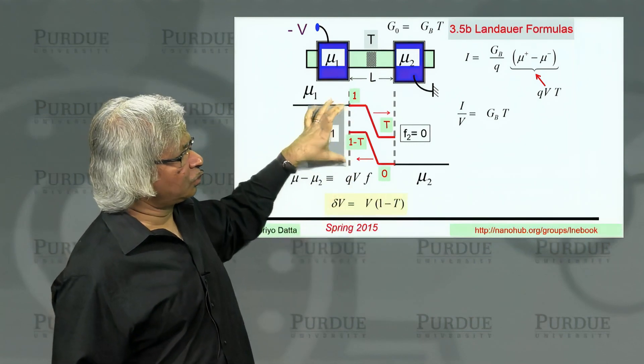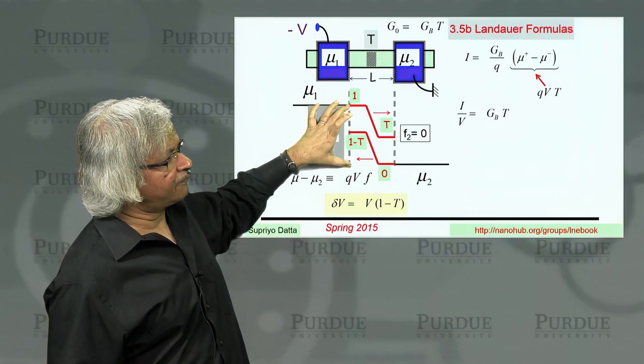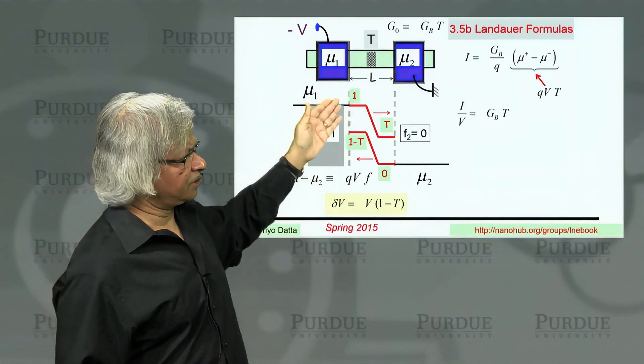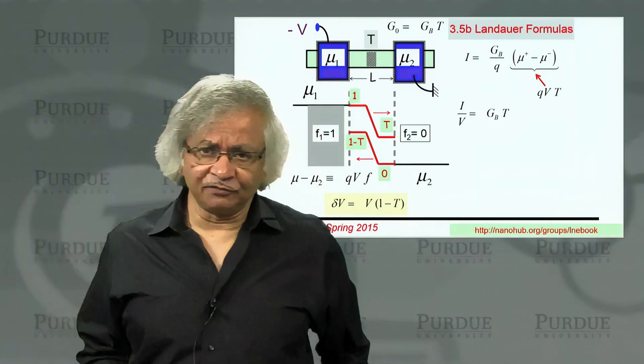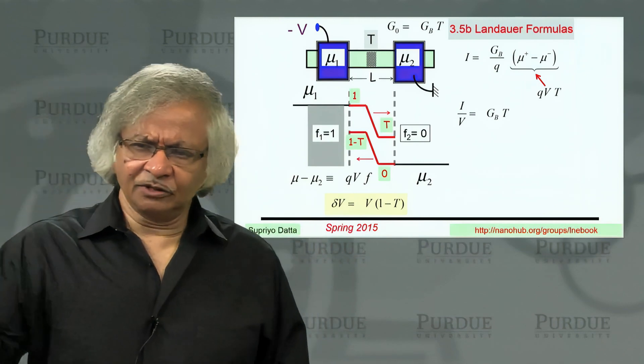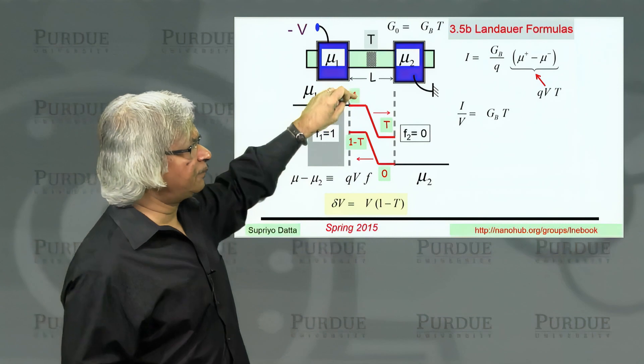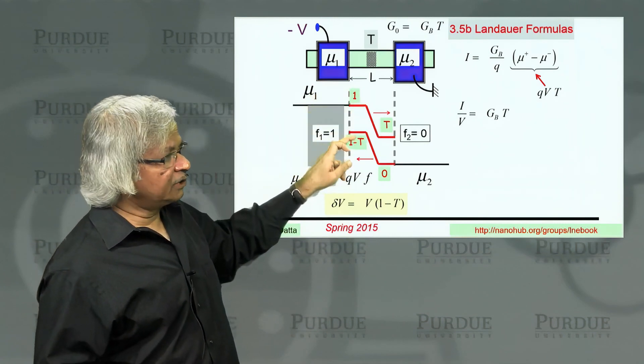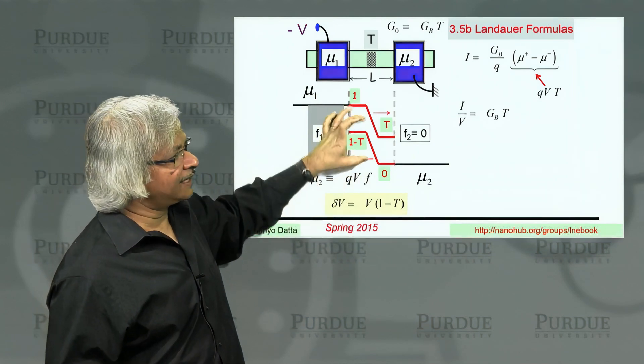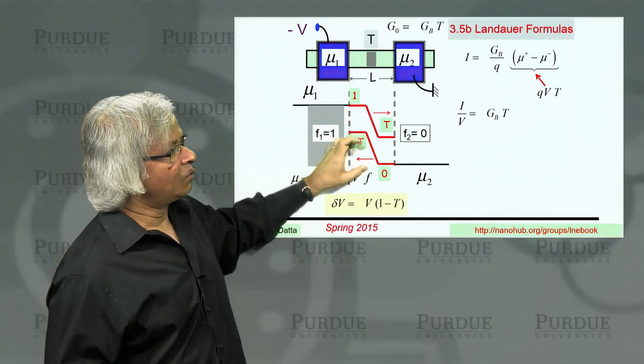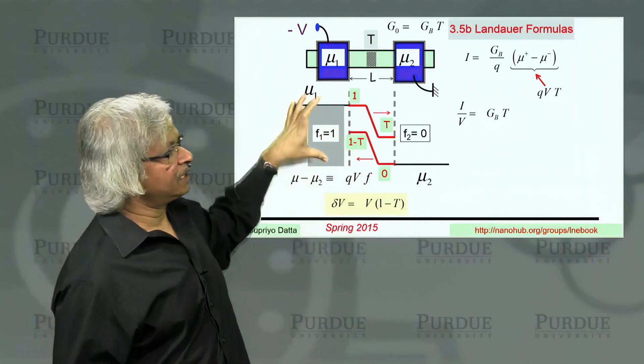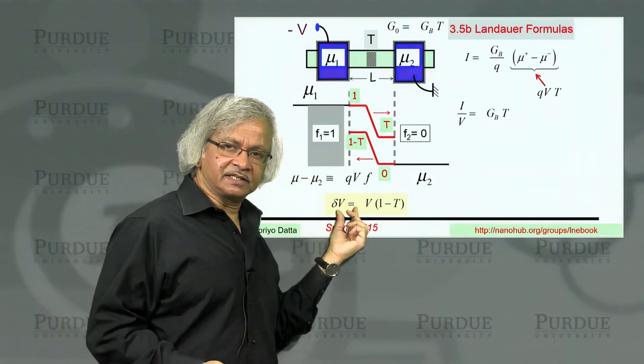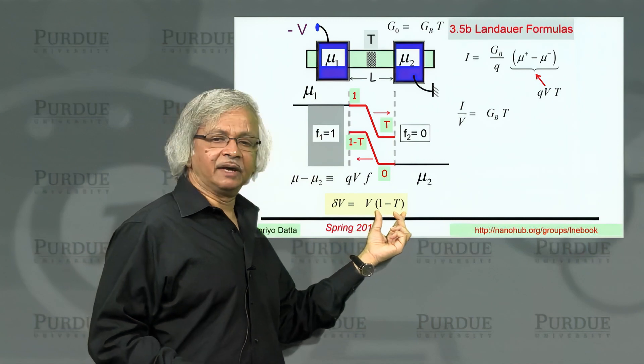What you should do is look at the voltage drop across the scatterer. The total voltage is that much, but only a fraction of it drops across the scatterer. You might say, but you have drawn two quasi-Fermi levels, which one should I look at? Answer is look at either one. If you look at the top one, it goes from 1 to T. If you look at the bottom one, it goes from 1 minus T to 0. In either case, the drop across the scatterer is 1 minus T times the overall voltage.